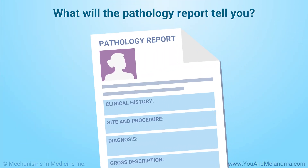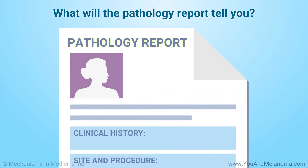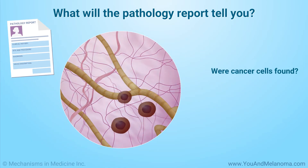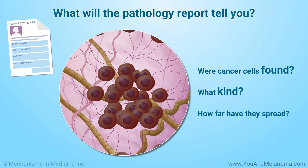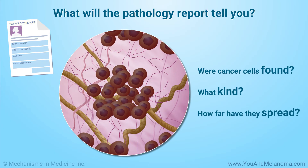After the biopsy, you will get a detailed report of its results. This is called a pathology report. Some of the things it will tell you are: were cancer cells found? If so, what kind? And how far have they spread?